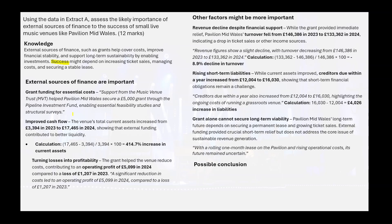We've got some quotes in there as well. There's always going to be two sides of this - it could be important, or there might be stuff that's more important. I'm saying external finance is important to the success of small live music venues like Pavilion Mid Wales - I've answered the question. Now, if you can't get your head around justifications, this is where you should stop writing and move on to the 20 marker. Do not waste your time rewriting something you've already said.